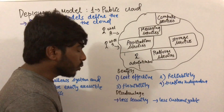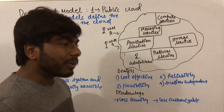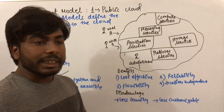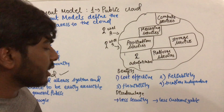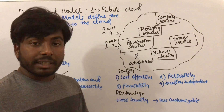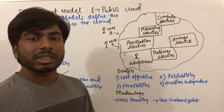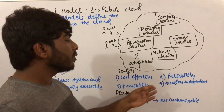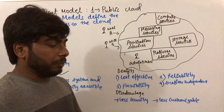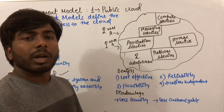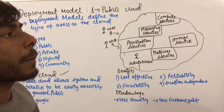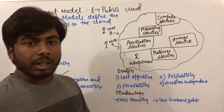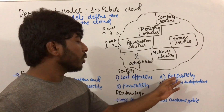Benefits of public cloud. First one is cost effective. Suppose my company Kentaro needs a facility of email — then it doesn't need to set its own infrastructure. They can directly use the email services by paying to Google, so public cloud is cost effective. Second one is reliability. Public clouds are distributed in nature, so there is high availability of servers. In case any server fails, we don't need to worry — so public cloud is reliable.